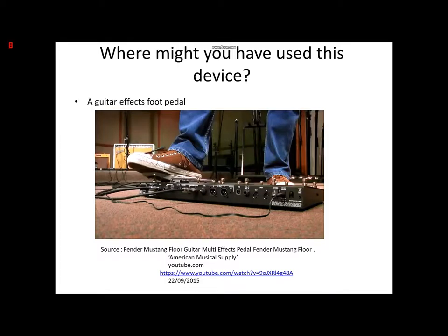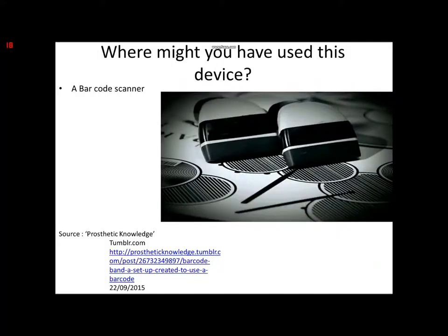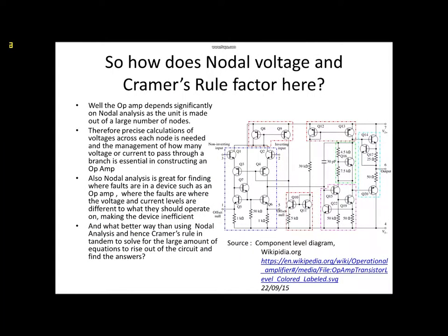So, for example, a guitar effects foot pedal, a boombox, and a barcode scanner. The op-amp depends significantly on node analysis as the unit is made out of a large number of nodes.